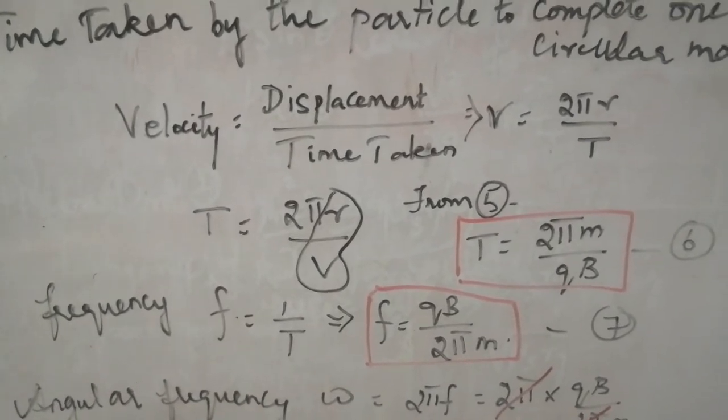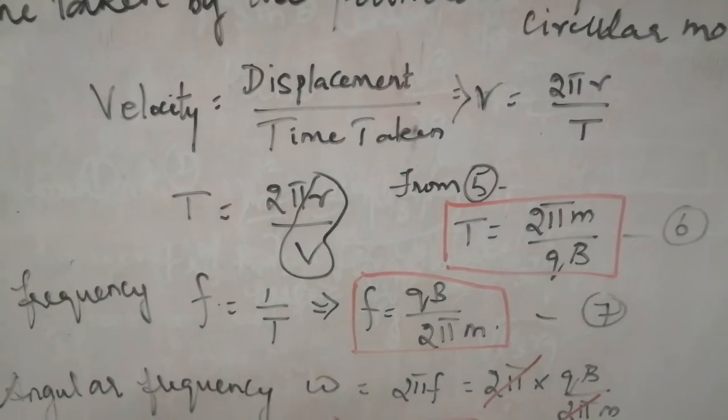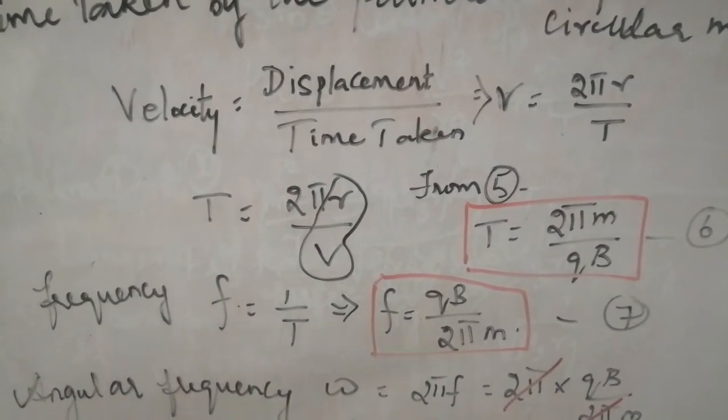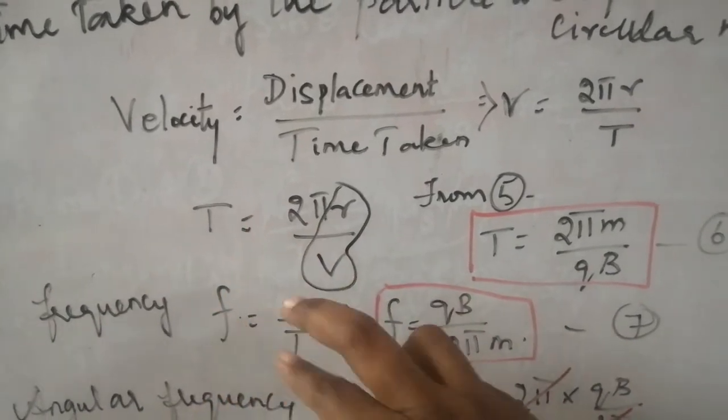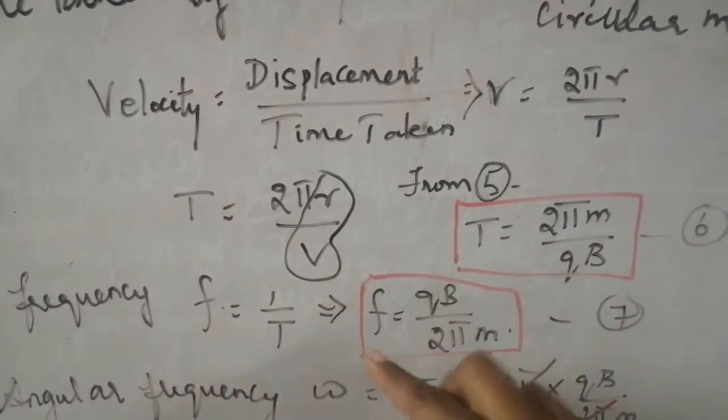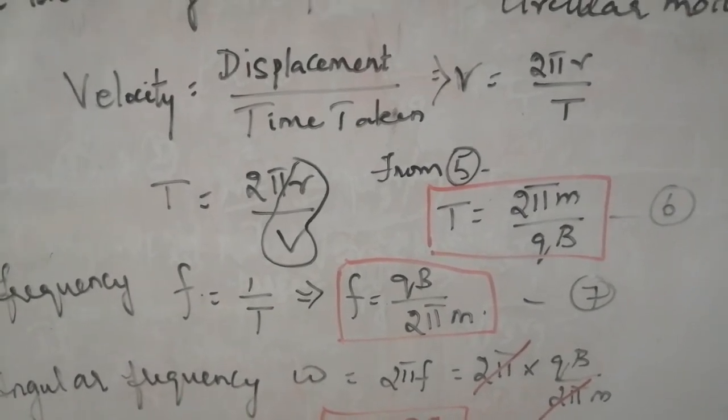Then I am going to find the frequency in which the particle will move. The frequency is given by F is equal to 1 by T. Frequency is just the inverse of time. So if you inverse this time and write, you will get the frequency F is equal to QB by 2πM.